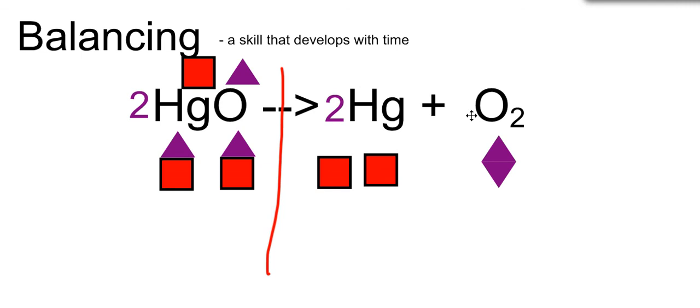You can also do the reverse, synthesis reactions, where two reagents make one product. That will be another simplistic balancing equation.